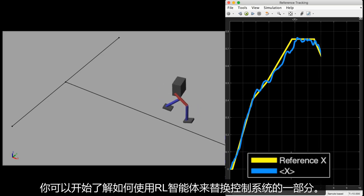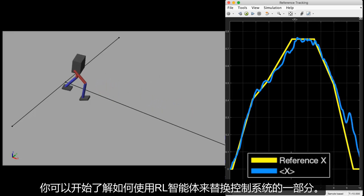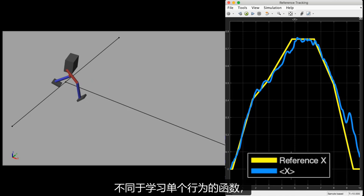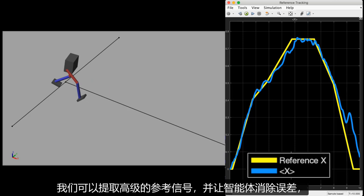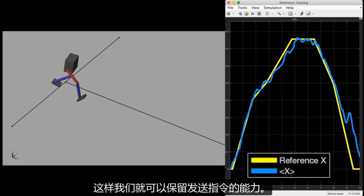So in this way, you can start to see how we can use an RL agent to replace part of the control system. Instead of a function that learns a single behavior, we can extract the high-level reference signal and have the agent work off error so that we can retain the ability to send commands.